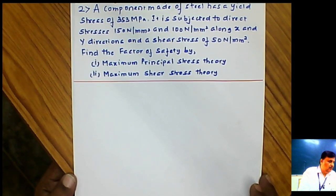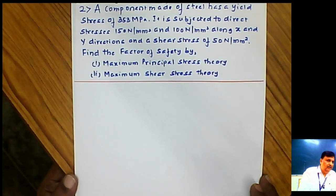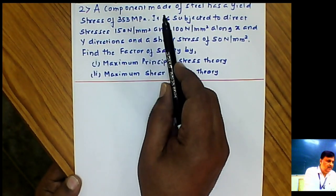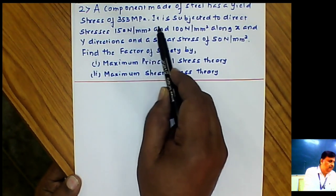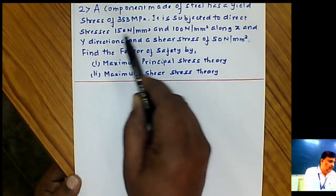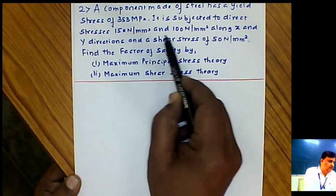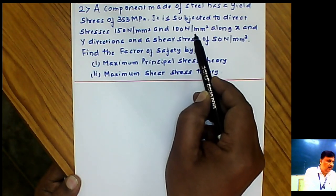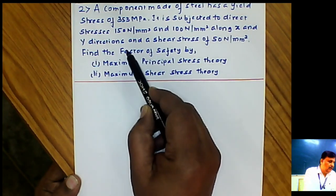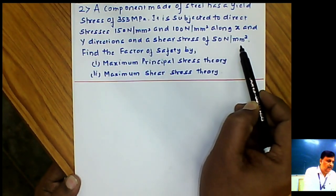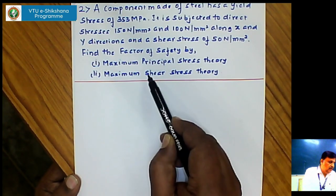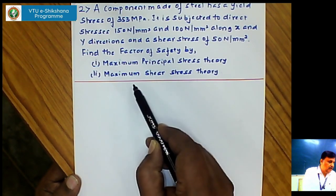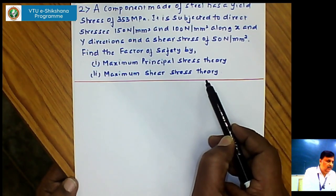Let us solve a problem on theories of failure. A component made of steel has a yield stress of 353 MPa. It is subjected to direct stresses of 150 N/mm² and 100 N/mm² along X and Y directions, and a shear stress of 50 N/mm². Find the factor of safety by maximum principal stress theory and maximum shear stress theory.